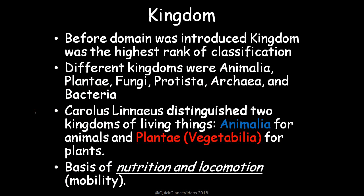Then we have kingdom. Before domain was introduced, kingdom was the highest hierarchy of classification. Different kingdoms are Animalia, Plantae, Fungi, Protista, Archaea, and Bacteria. Carolus Linnaeus originally distinguished mainly two: Animalia and Plantae. This was divided on the basis of nutrition and locomotion — plants are not mobile, animals are mobile. That's the broad classification done by Carolus Linnaeus.